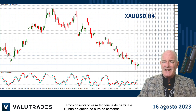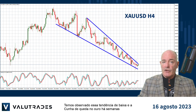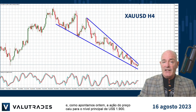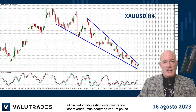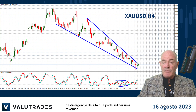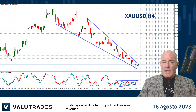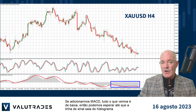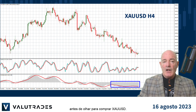We've been watching this downtrend and falling wedge on gold for weeks now, and as we pointed out yesterday, price action has fallen to a key level of $1900. The stochastic oscillator is showing oversold, but we can see a bit of bullish divergence, which may indicate a reversal. If we add MACD, all we see is bearish, so we may want to wait until the signal line passes out of the histogram before looking at buying XAUUSD.